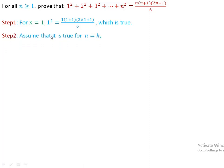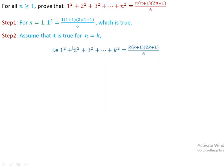Step 2: Assume that it is true for n = k. That means 1² + 2² + 3² + ... + k² = k(k+1)(2k+1)/6.